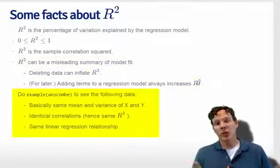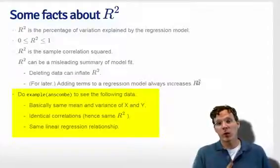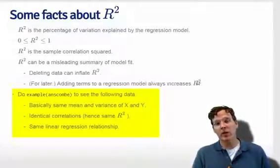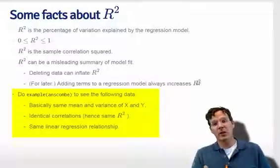Anscombe created a particularly stark example of a bunch of data sets with equivalent R-squared, equivalent mean and variance in the X's and the Y's, and identical regression relationships. But when you look at the scatter plots, you can see that the fit has very different meanings in each of the cases.